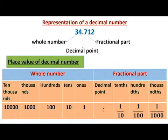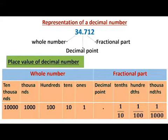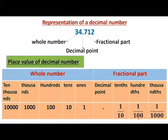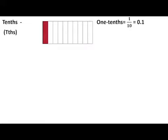On the right side of the decimal point we have the place values as tenths, hundredths, and thousandths. Tenths is represented as one by ten, hundredths is represented as one by hundred, and thousandths is represented as one by thousand.